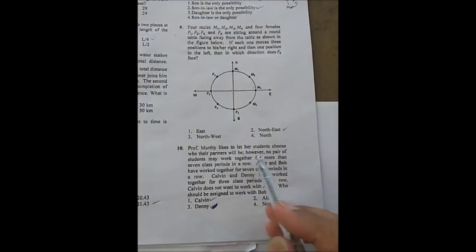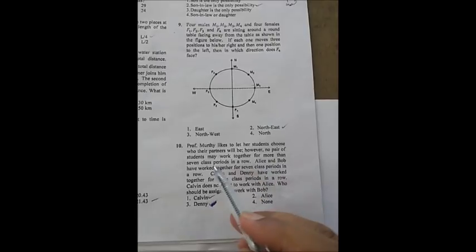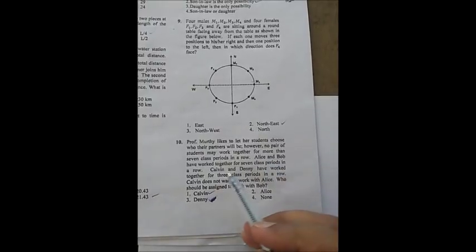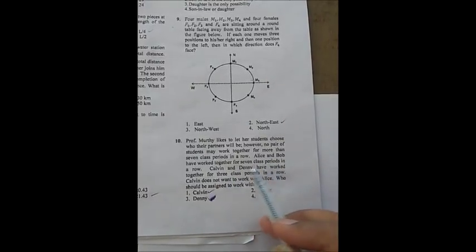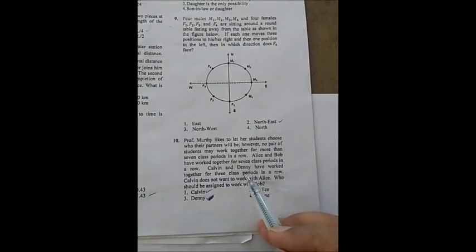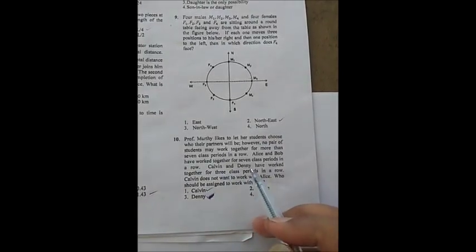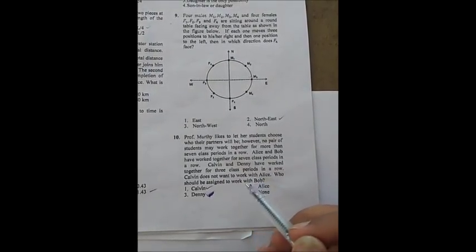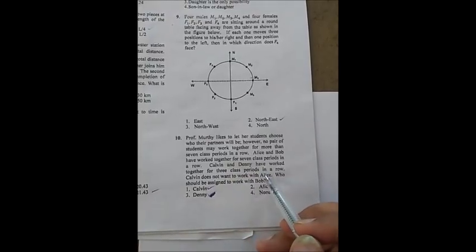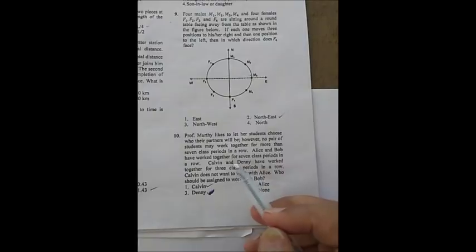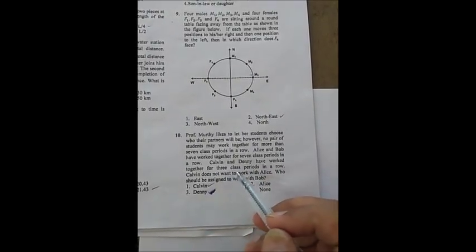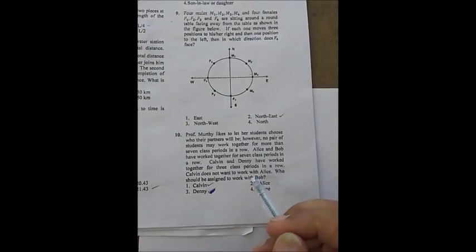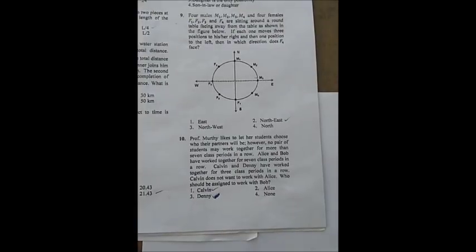The Professor Murthy question: no pair can work together for more than seven classes. Alice and Bob have already worked together for seven classes, so they cannot work together anymore. Kelvin and Denny have worked together for three classes. Kelvin does not want to work with Alice. So Kelvin can only be assigned to work with Bob. The correct option is Kelvin.